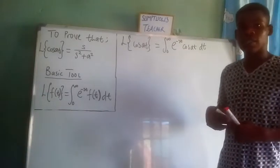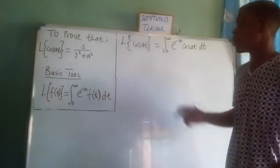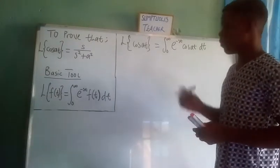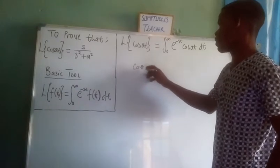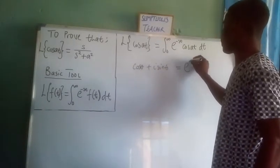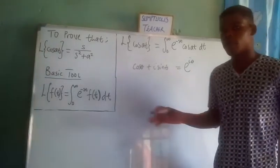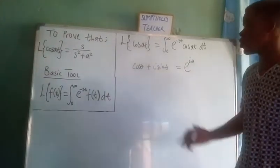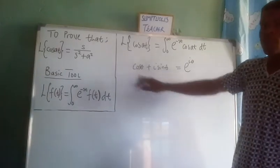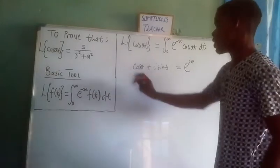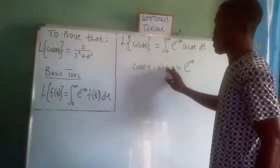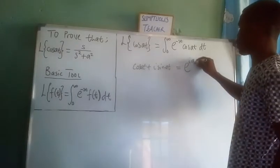Considering the integrand, integration by parts is possible but we are not going to make use of that. Rather we are going to use something different. We know that cosine(θ) plus i·sine(θ) is actually the same thing as e to the i·θ. Considering this, we have the real part and the imaginary part. If we set our argument θ equal to at, we can see cosine(at) appearing right there.